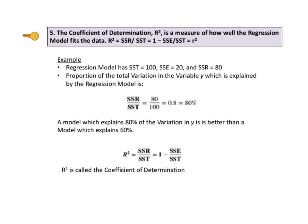Here's an example. A regression model has SST equals 100, SSE equals 20, and SSR equals 80. The proportion of the total variation in the variable y, which is explained by the regression model, is SSR divided by SST equals 80 over 100 equals 80 percent.